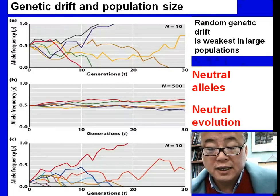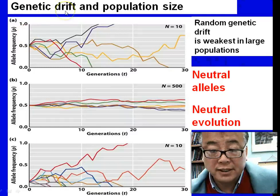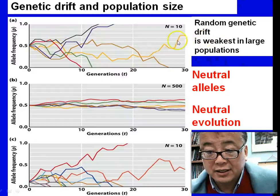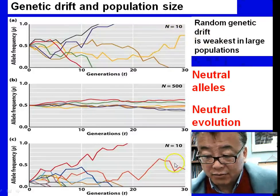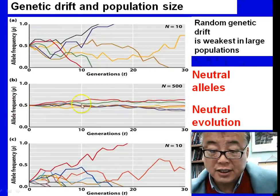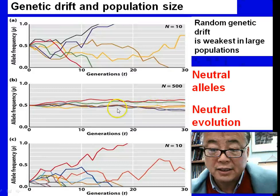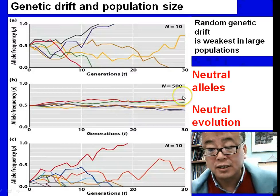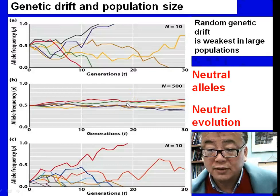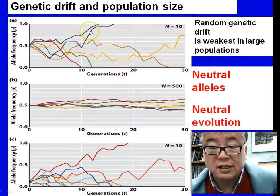Genetic drift is a random sampling of the population, and that random sampling effect is weakest when you have a large population. With 500 individuals, the allele frequency change is very little — we don't have that much variation — because the larger number buffers the random genetic drift.